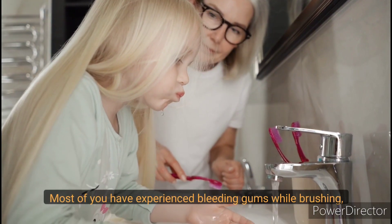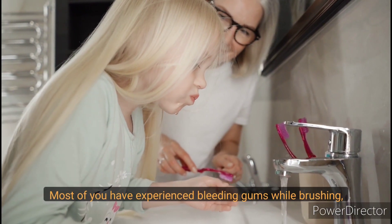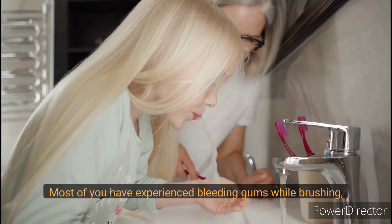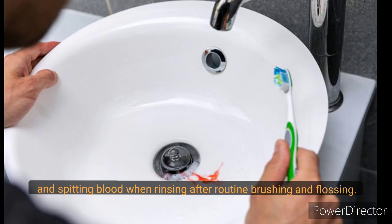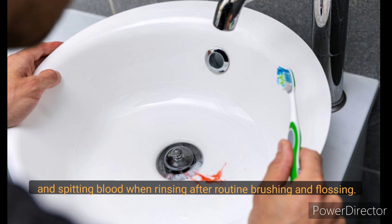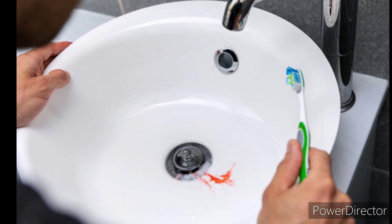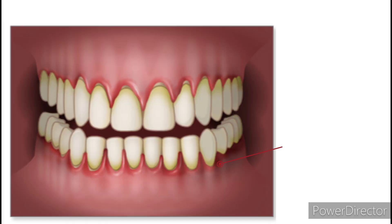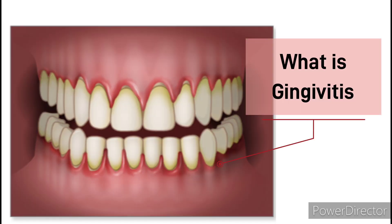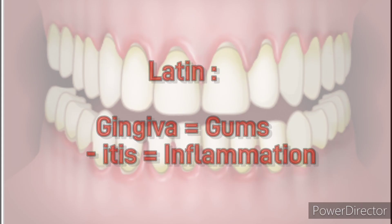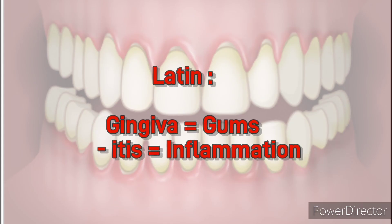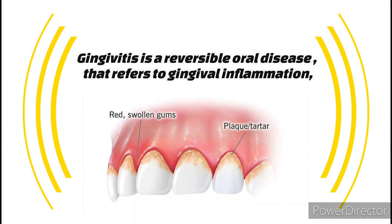Most of you have experienced bleeding gums while brushing and spitting blood when rinsing after routine brushing and flossing. Let's understand what is gingivitis. It's a Latin word — gingiva equals gums, and itis means inflammation. Gingivitis is a reversible oral disease.